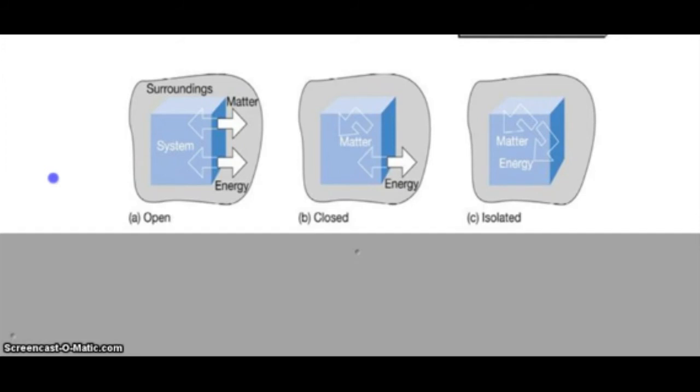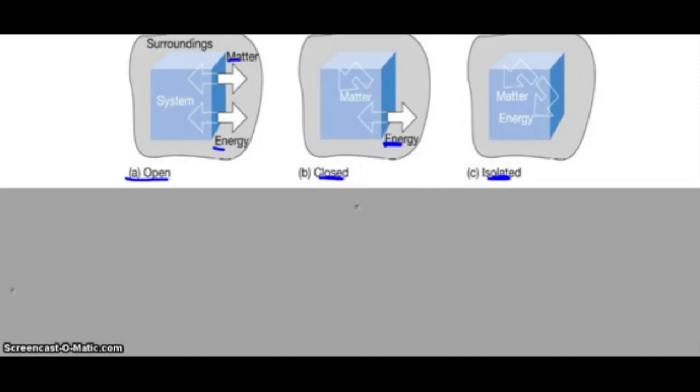So, an open system, you have energy in and out, you have matter in and out. A closed system, there's only energy moving in and out. An isolated system has neither energy nor matter moving in or out.